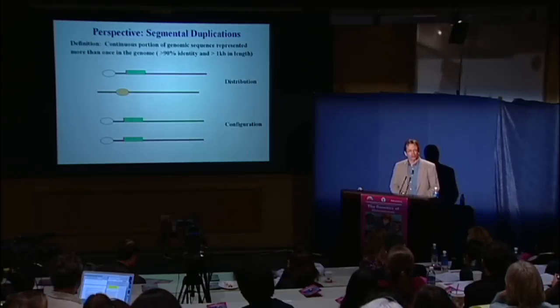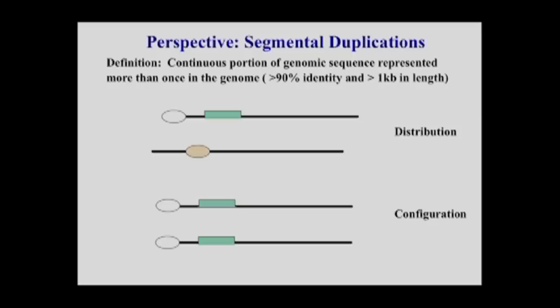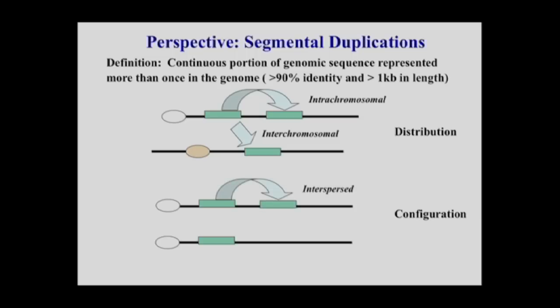A bit of background: the term I will use is segmental duplications. Segmental duplications are nothing more than recently duplicated sequences defined at the genomic level as pieces of DNA greater than a kilobase in size and with greater than 90% sequence identity. There are differences in distribution: sometimes they can be distributed within a chromosome, or between different chromosomes, which we refer to as intra- versus inter-chromosomal duplications. They can also differ in configuration — separated from their ancestral sequence by large distances, which we call interspersed, or side-by-side, which we call tandem.